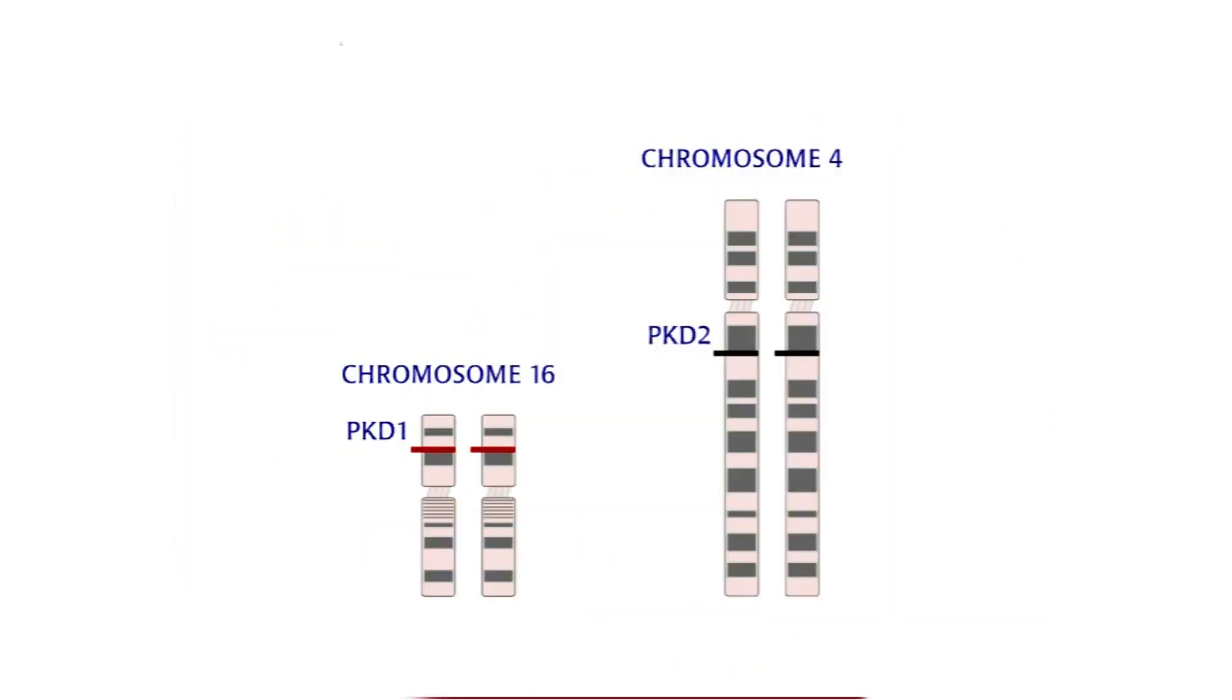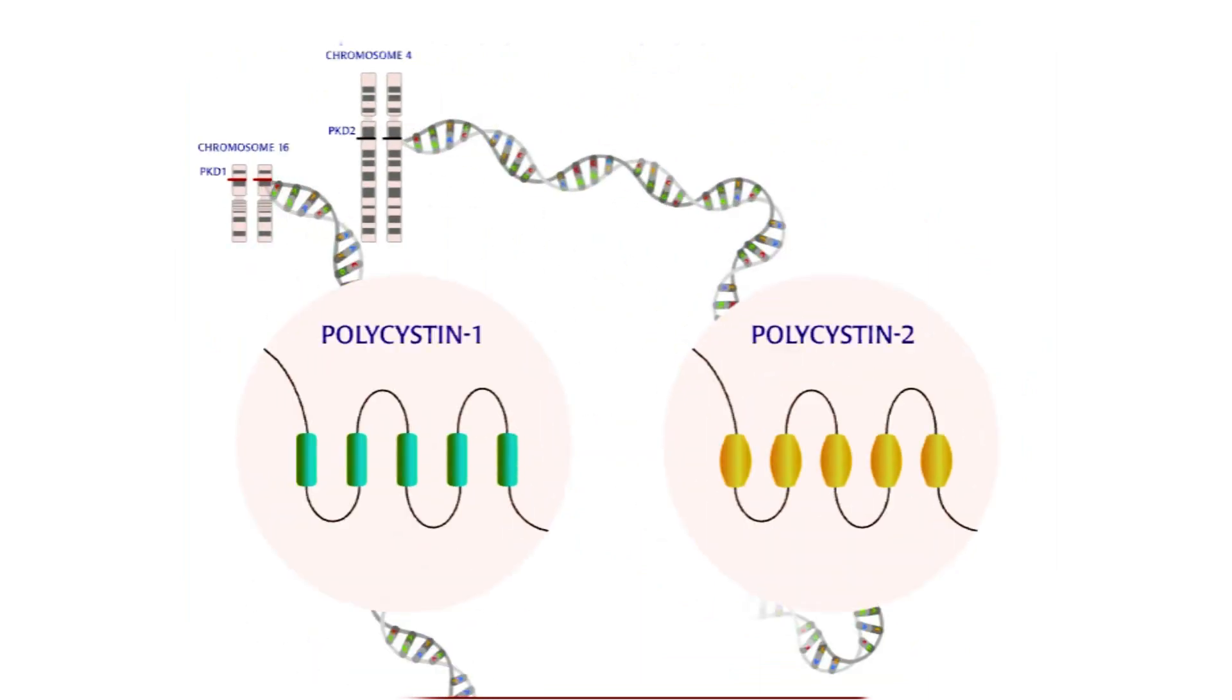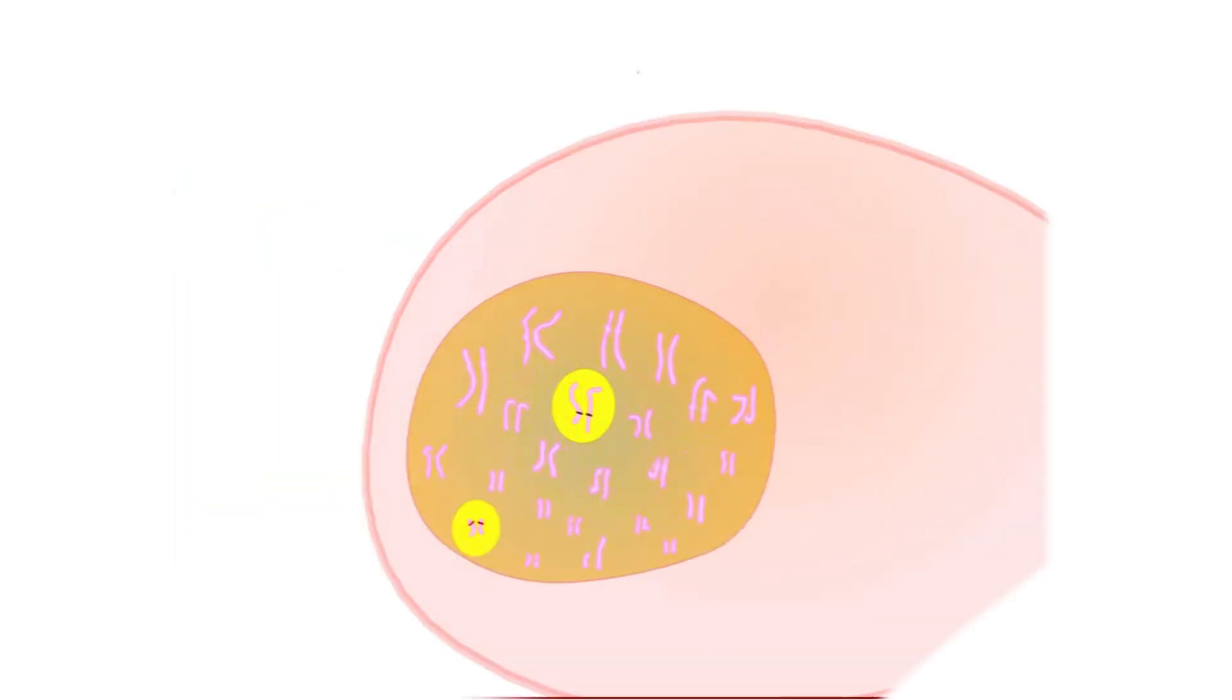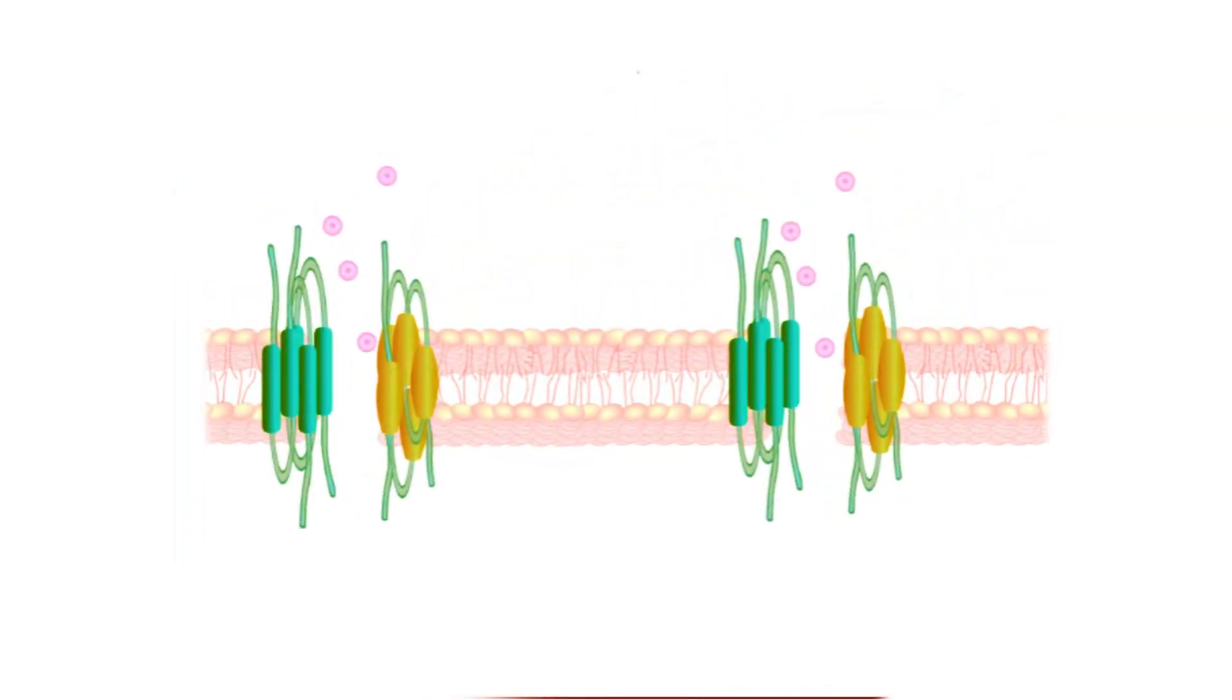Why are PKD1 and PKD2 so important? The cell uses these two genes to produce two proteins: polycystin-1 and polycystin-2. Together, polycystin-1 and polycystin-2 form a channel on the surface of the cell which allows small molecules to enter.